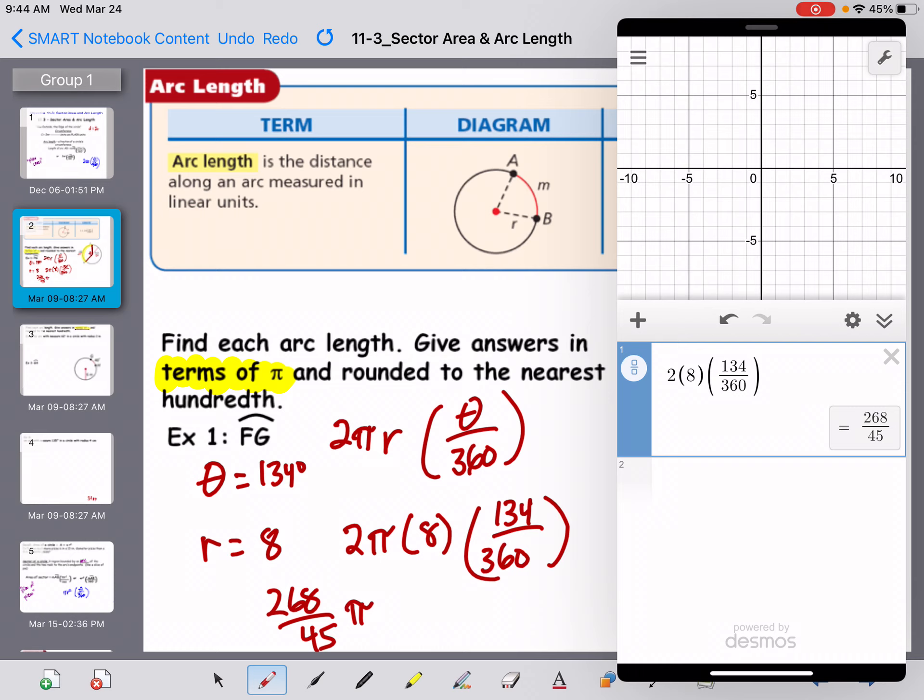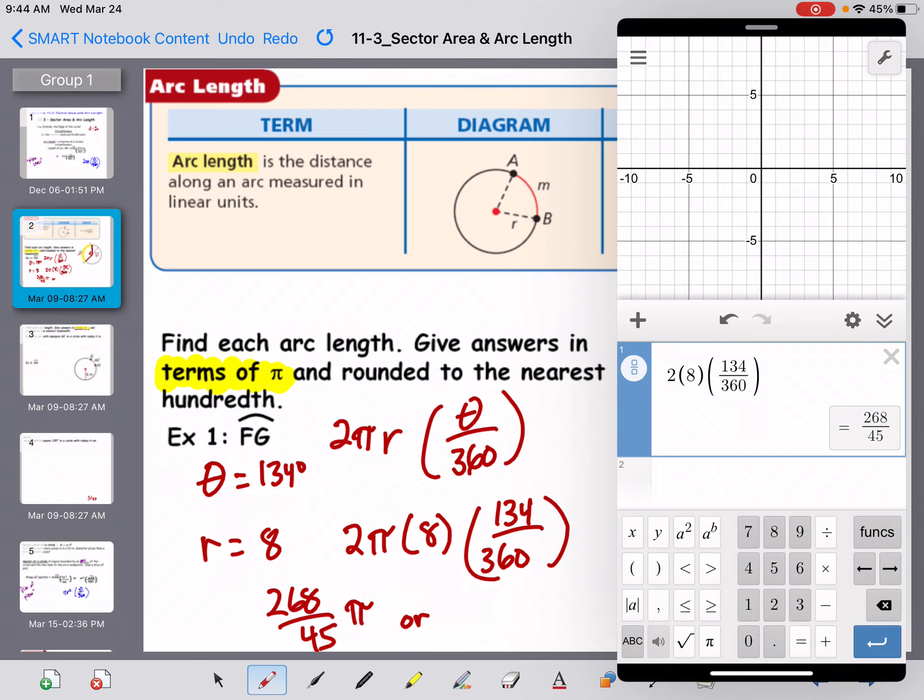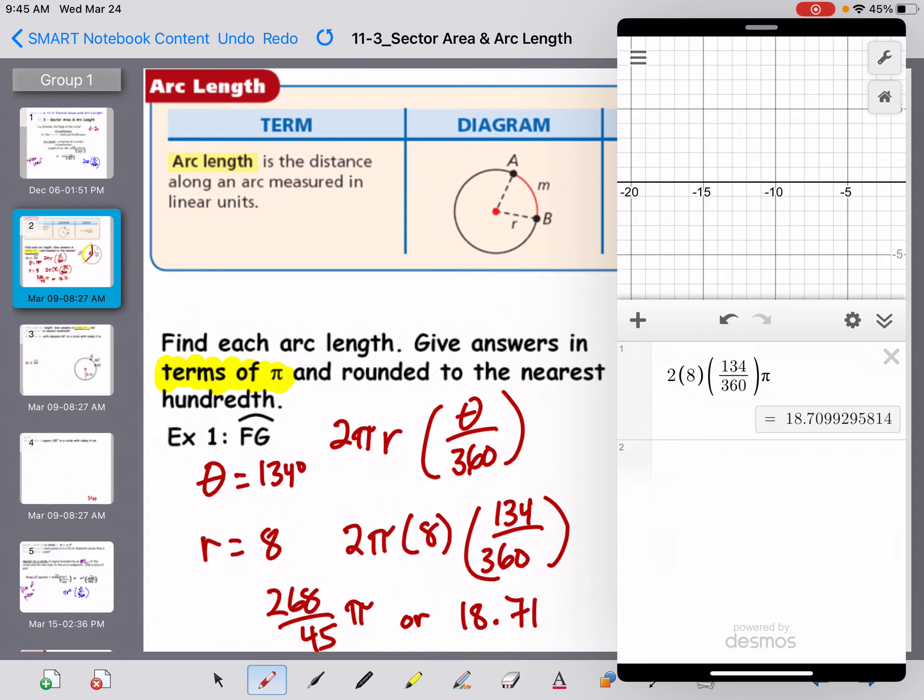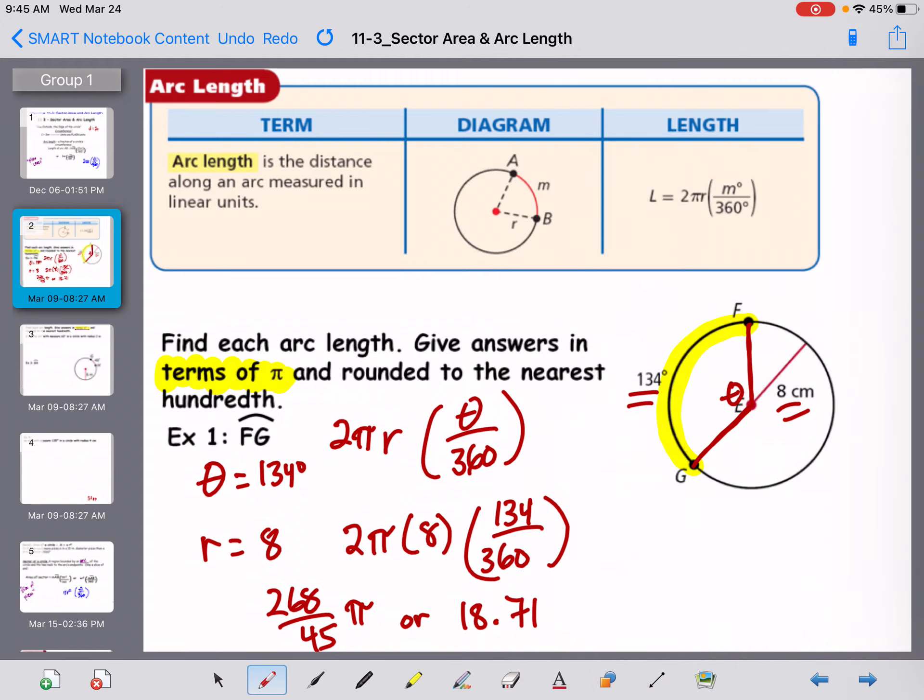So my fraction might need an actual pencil here, is 268 over 45. And then you've got to put pi. So when it says leave it as in terms of pi, then you've got to write it as a fraction. Or you can go in here, and you hit that pi symbol, and you get this decimal, 18.71. It wanted it to the nearest hundredth. So it's really not hard. You've just got to plug all the pieces in.